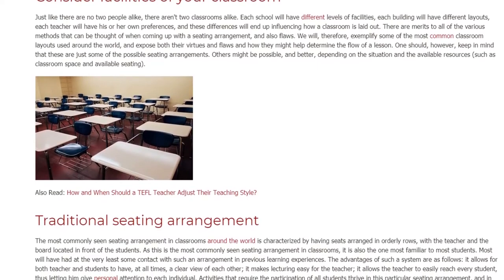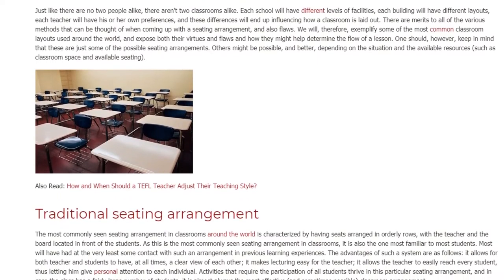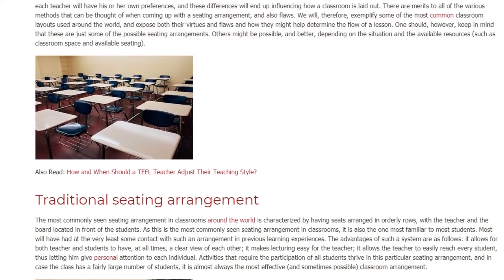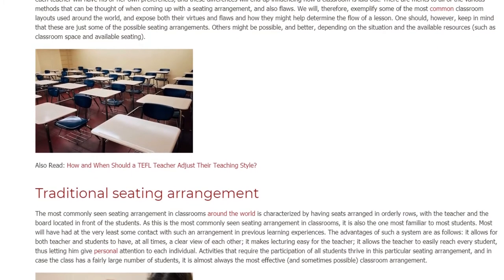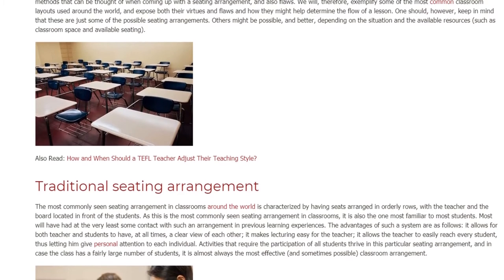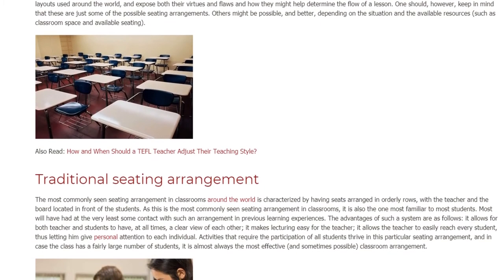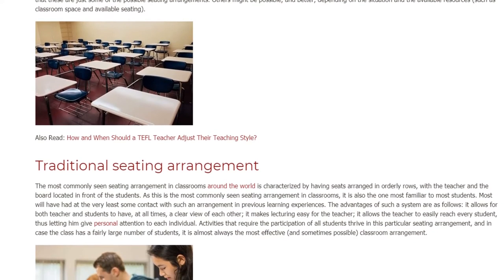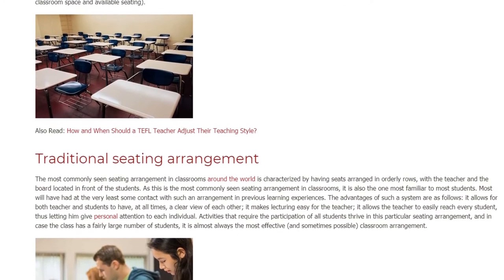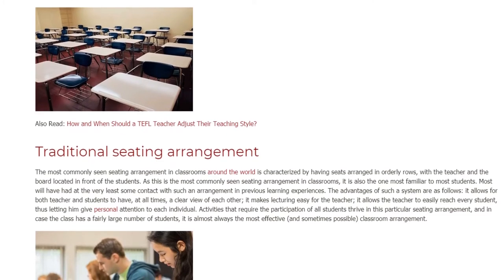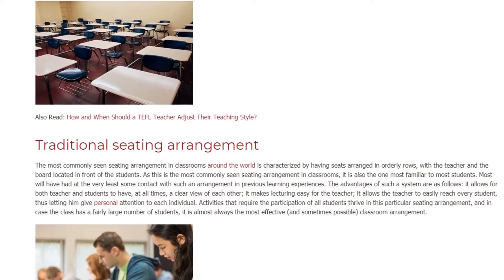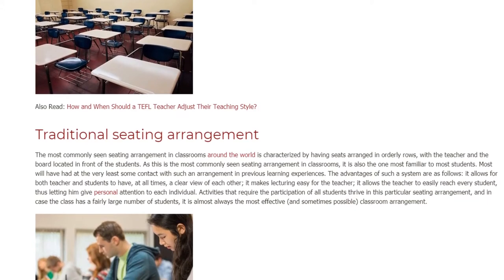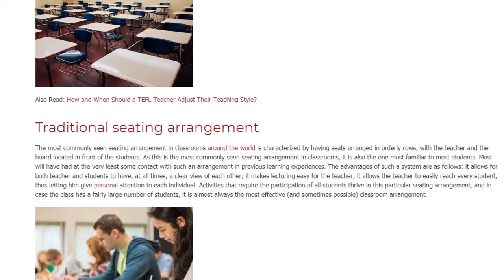Traditional Seating Arrangement. The most commonly seen seating arrangement in classrooms around the world is characterized by having seats arranged in orderly rows, with the teacher and the board located in front of the students. As this is the most commonly seen seating arrangement, it is also the one most familiar to most students. Most will have had at the very least some contact with such an arrangement in previous learning experiences.